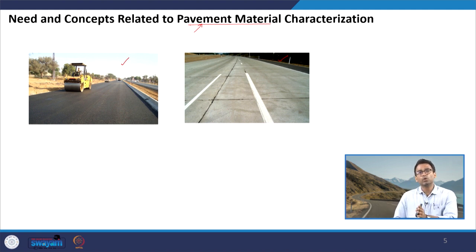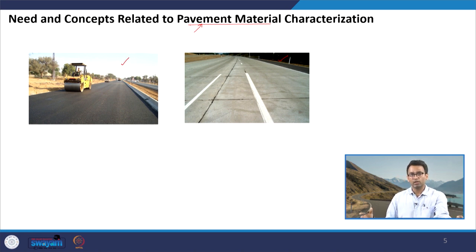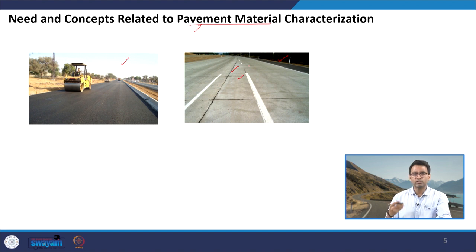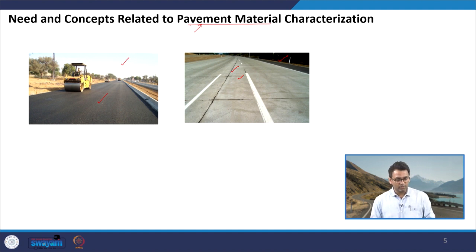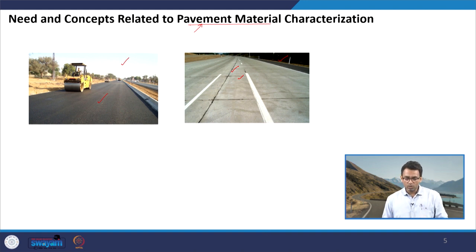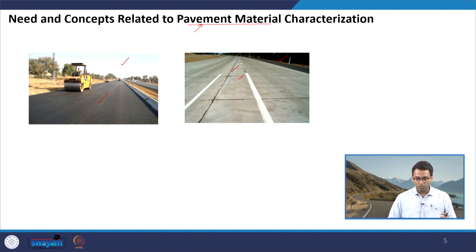Some differences you can make out from these two pictures: the flexible pavement appears to be darker in colour compared to the concrete pavement, which is why flexible pavement is sometimes called a black top pavement. In concrete pavement, some very distinct joints are visible, and you will also feel these joints when riding on the surface of the concrete pavement. In the flexible pavement, you do not see any such joints present at the surface.